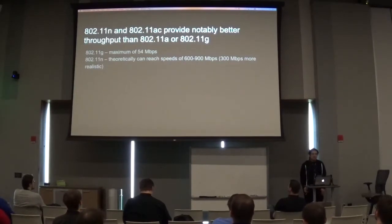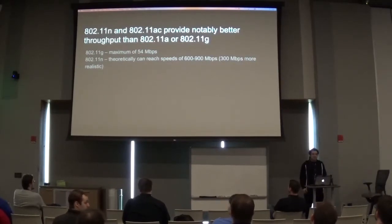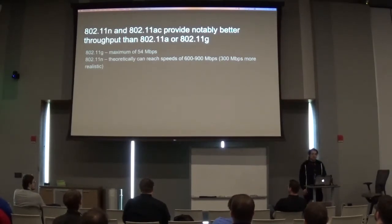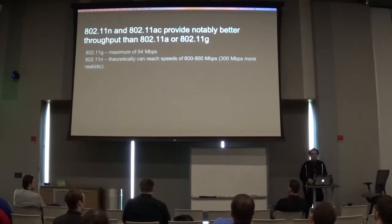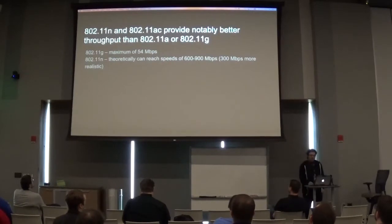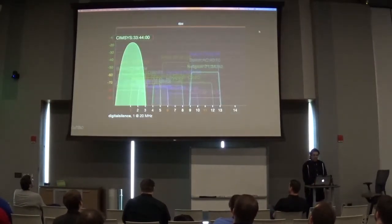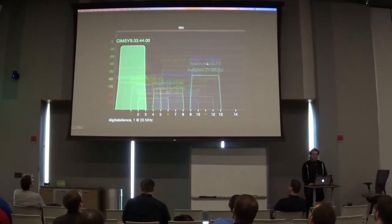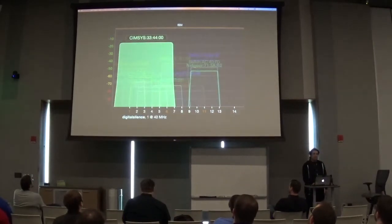802.11ac provides much better throughput and signal than older protocol versions. If you consider 802.11g, you're looking at a maximum of about 54 megabits per second. 802.11n is the next step up below 802.11ac, and it theoretically can reach speeds of 600 to 900 megabits per second. Realistically you'll cap out around 300 Mbps. Looking at the frequency graphs, you can see this massive 802.11n access point compared to the much narrower older access points.